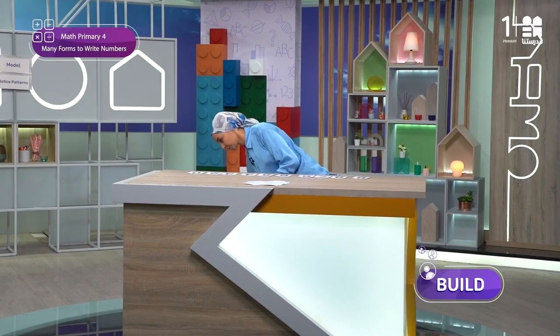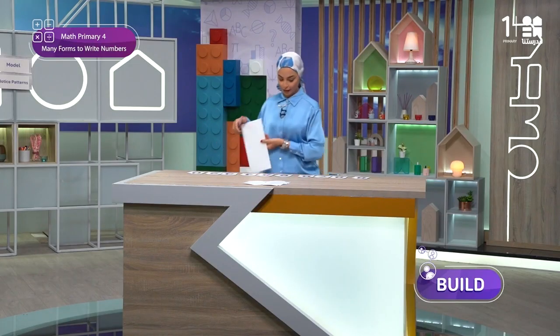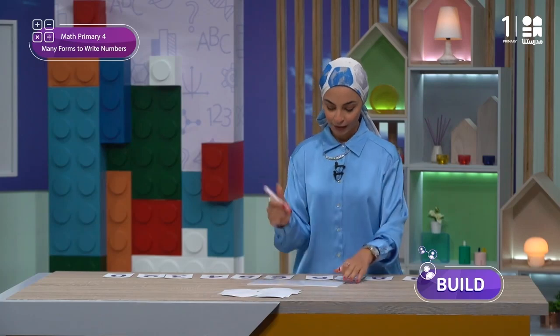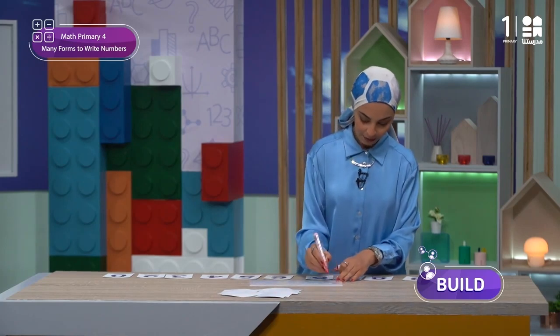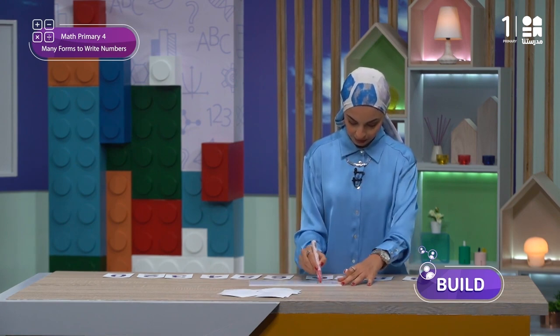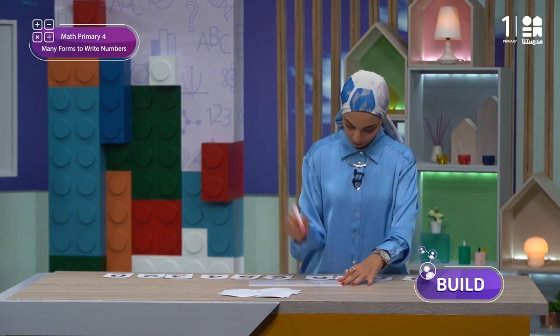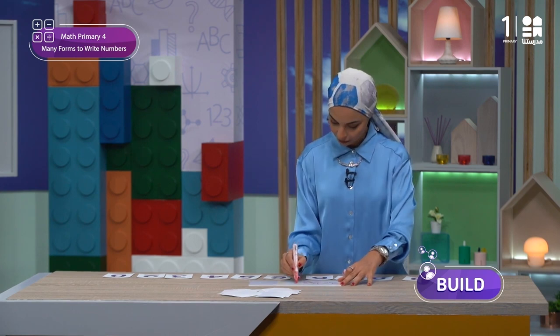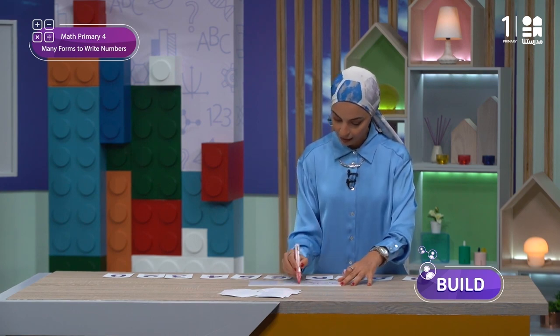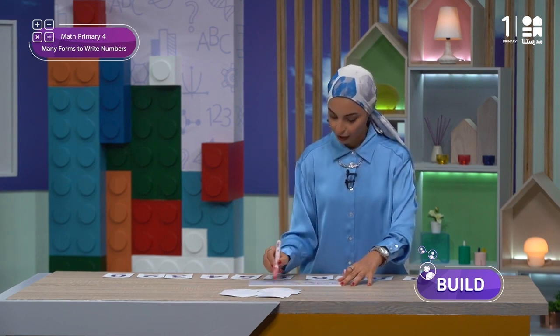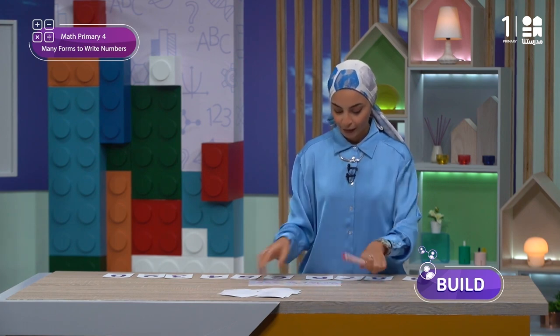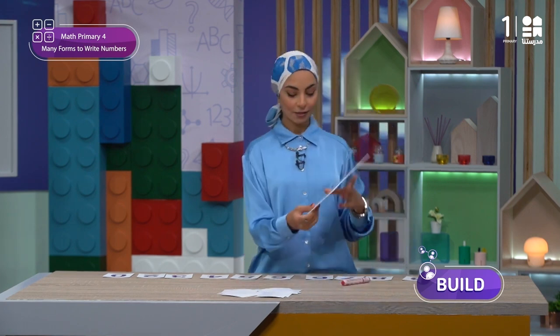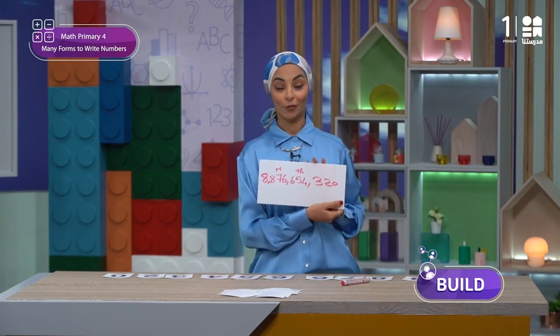Let's write it. Again, the number is eight in the milliard, eight hundred seventy-six in the million place, six hundred fifty-four in the thousand place, three hundred twenty. So as you see here, this is the number.